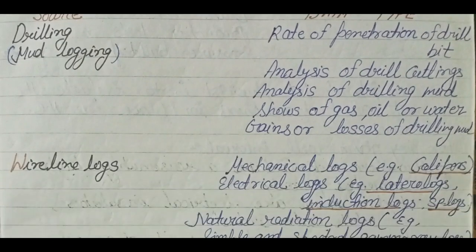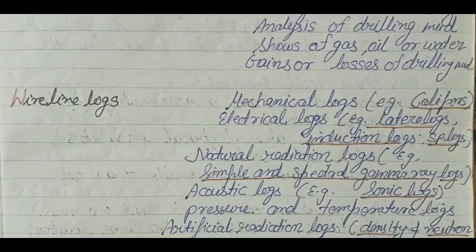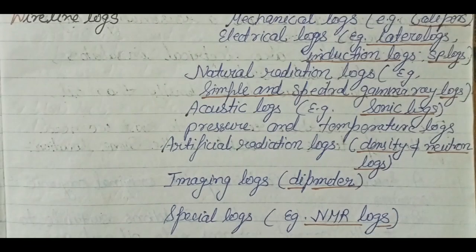Wireline logs already discussed include mechanical logs like the caliper log, and electrical logs such as lateral logs, induction logs, and SP logs. There are natural radiation logs where the source is natural — for example, simple and spectral gamma ray logs. There are acoustic logs like sonic logs, pressure and temperature logs, and artificial radiation logs like density and neutron logs. There are also imaging logs, dipmeter, and special logs like nuclear magnetic resonance (NMR) logs.